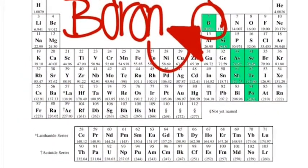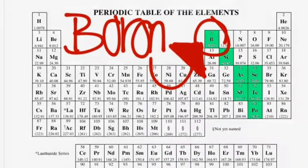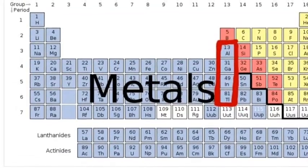Boron is a metalloid, different from the other four. The rest of them are other metals.